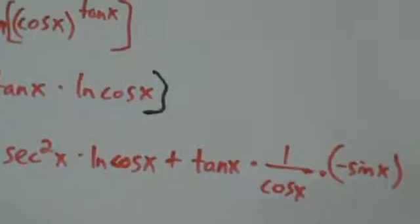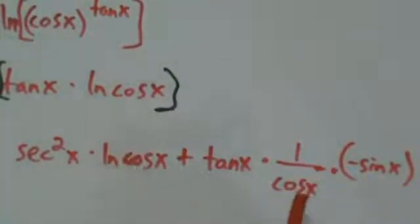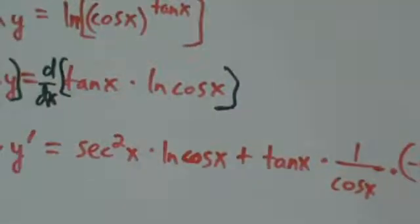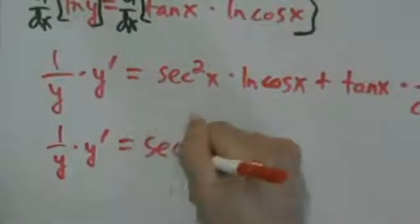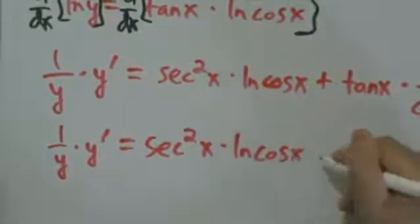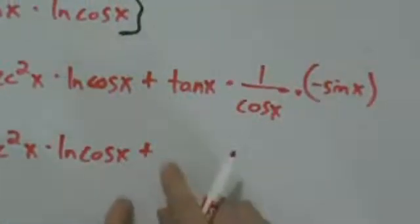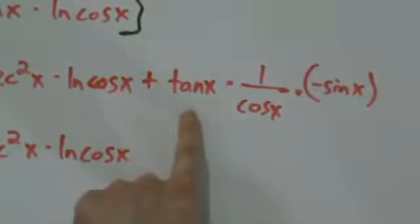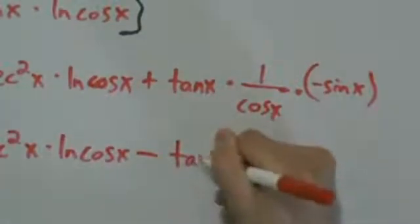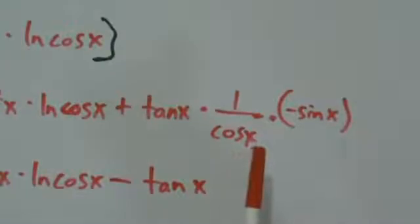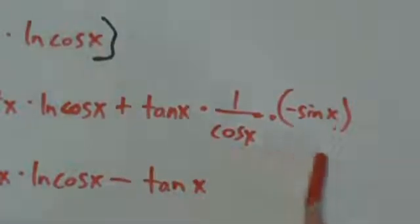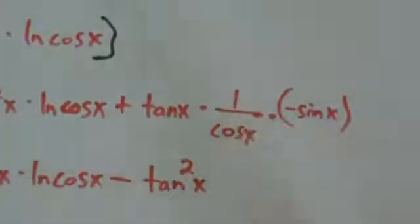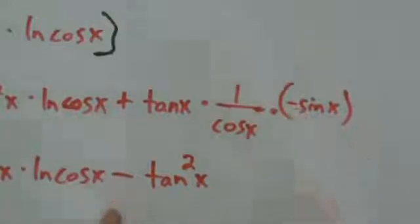We really should keep those parentheses because we have a minus sign in here — that comes from the chain rule. So simplifying: 1 over y times y prime equals secant squared of x times natural log of cosine of x, and then minus — because we have plus tangent times the expression with a minus sign inside. We have tangent of x times 1 over cosine of x times sine of x, which is really sine divided by cosine, which is tangent. So it becomes tangent times another tangent, giving us tangent squared of x.